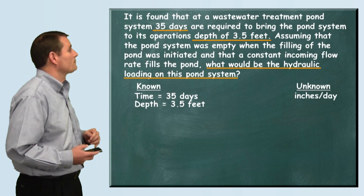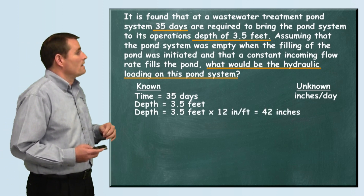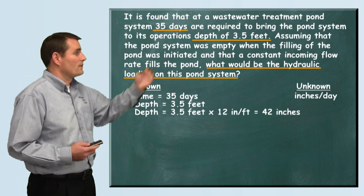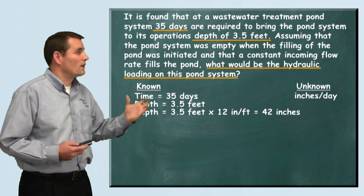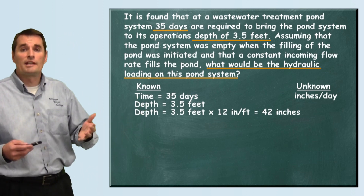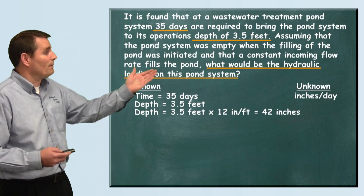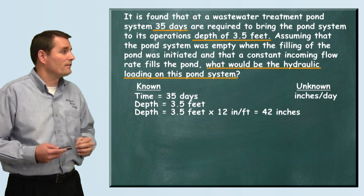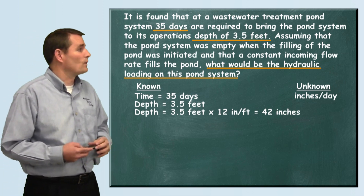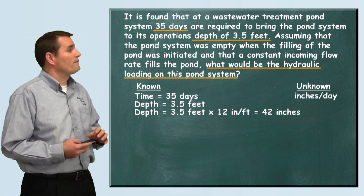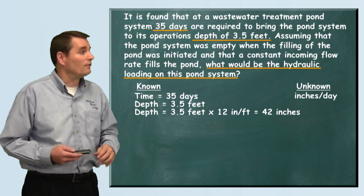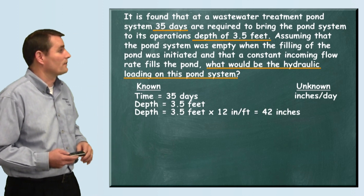When you're dealing with inches per day, we want to convert our 3.5 feet to inches. By multiplying 3.5 times 12, you get 42 inches. So in 35 days, we came up to an operational level of 42 inches.